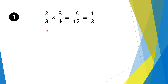We have 2/3 times 3/4. We always try to multiply the numerators first, and then multiply the denominators second. So 2 times 3 is 6, and 3 times 4 is 12. Now top and bottom is divisible by 6. So 6 goes into 6 once, and 6 goes into 12 twice. So our solution is a half.